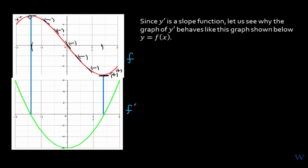We have another zero on the green curve because there's another zero slope here. So looking at the green curve, you see another zero of the derivative function — one here and another one here — where both slopes are zero. Then onwards it becomes positive, and the green curve is again positive after passing the horizontal axis.